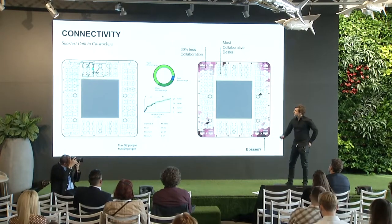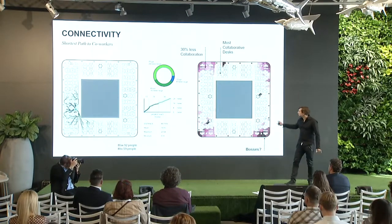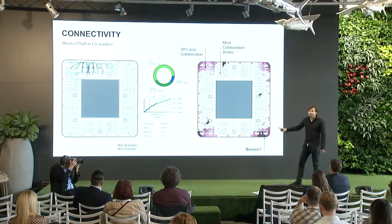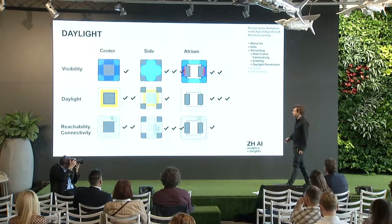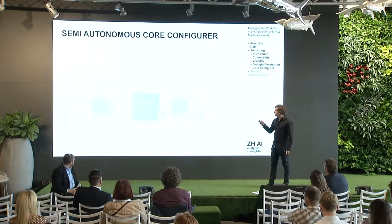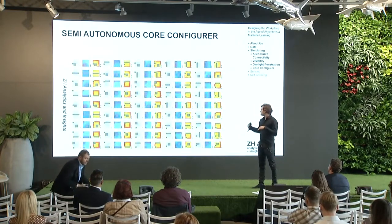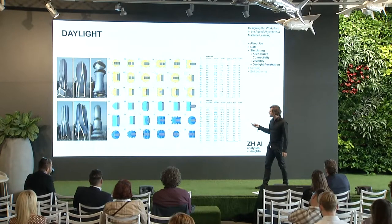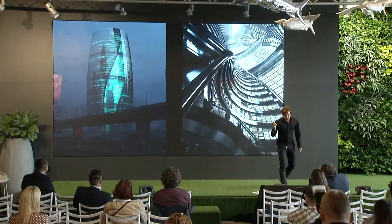We started with simple algorithms checking connectivity within generic floorplates, generating heat maps that show the most collaborative desks and the least collaborative spaces — for example, where the boss sits. Other parameters we're interested in include visibility, daylight, and reachability, related to physical connections. We combine these and create analytic tools that give us insight from millions of possible iterations, helping us with early designs so we can predict building performance at a very early design stage.